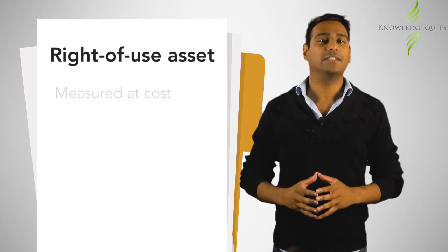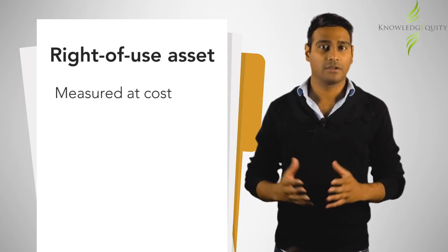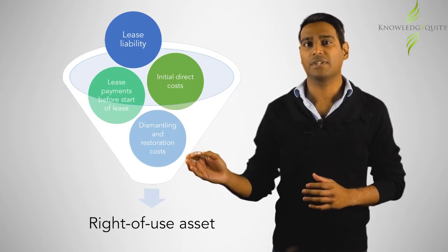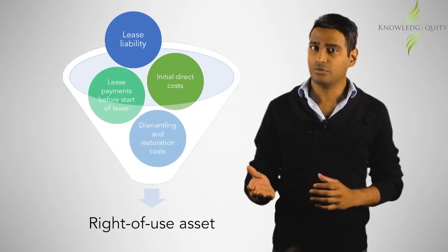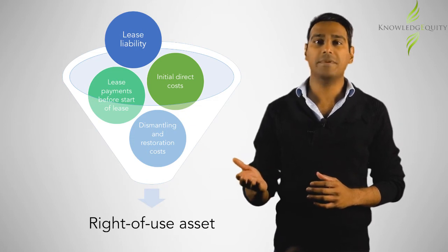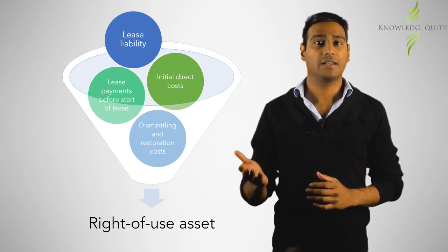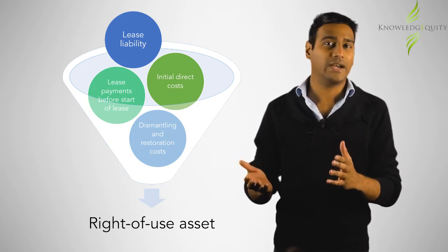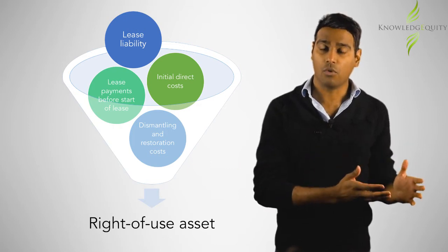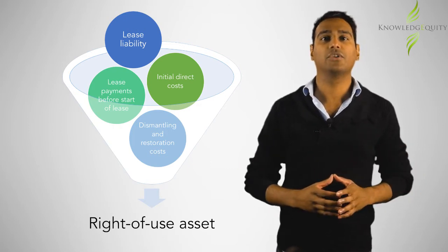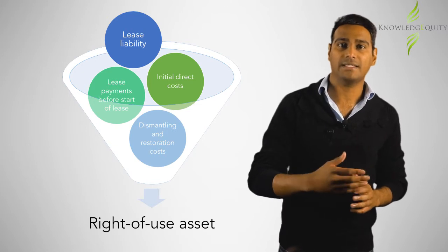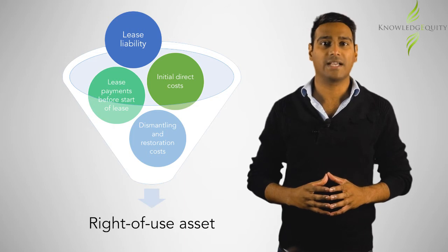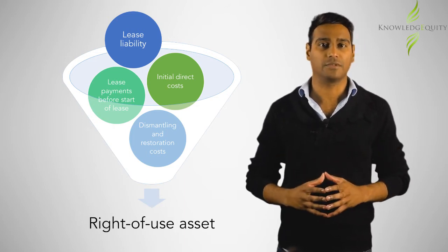The right of use asset is initially measured at cost. Cost comprises of the following: 1. The initial measurement of the lease liability. 2. Any lease payments made at or before the commencement of the lease, less any lease incentives received. 3. Any initial direct costs incurred by the lessee. 4. An estimate of the costs to be incurred by the lessee in dismantling and removing the underlying asset, and restoring the site and asset to the condition required by the terms of the lease.